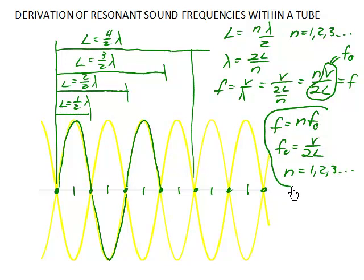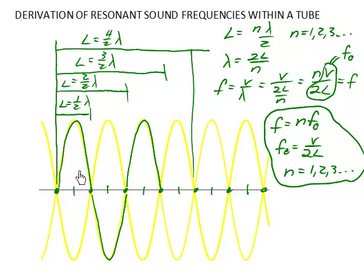This is also the same result you get with a tube that is open at both ends. That is, if you have antinodes at both ends, you can see that the mathematical conditions here would all be identical. Just shift the entire diagram over by this amount and everything else would be exactly the same. These equations are also the frequencies that would be inside a tube that is open at both ends.